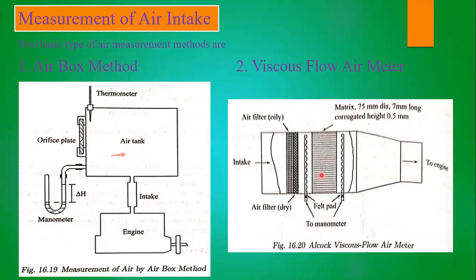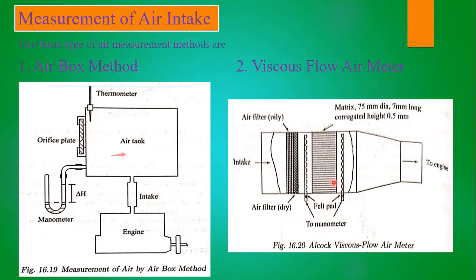The matrix in the viscous flow air meter damps the pulsations. After minimizing pulsations, the air is sent directly to the engine. A manometer is also included, and the pressure difference measured by it indicates air consumption. More precautions are taken here than in the air box method, making this the more accurate approach.